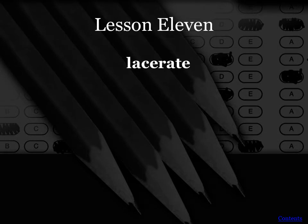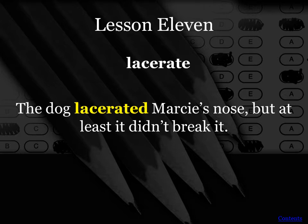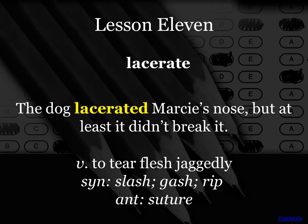Our next word is lacerate — this is another verb. You might think of the noun form, laceration. The sentence has to do with a dog causing an injury: the dog lacerated Marcy's nose, but at least it didn't break it. If something is lacerated, it means the flesh is torn in a jagged way — it's not an even cut or a clean break; there are rips and tears. This often happens with glass — if someone is in a car accident and the shattered glass lands in their skin, they get lacerations. Synonym would be to slash, gash, or rip. The opposite would be suture, another word for stitch — closing it up instead of tearing it.